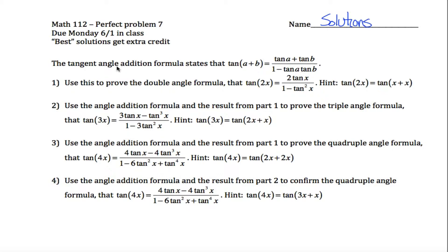Here is the tangent angle addition formula. Anytime you're taking the tangent of something plus something, you can rewrite it using this formula. What I'm first asked to do is use this to prove the double angle formula, that the tangent of 2x is equal to this.